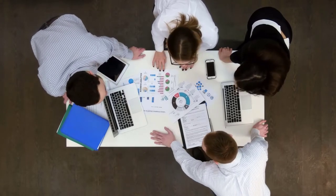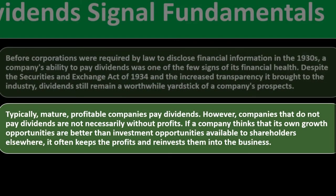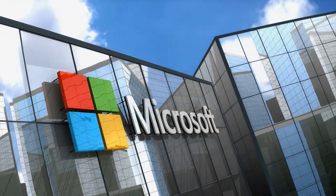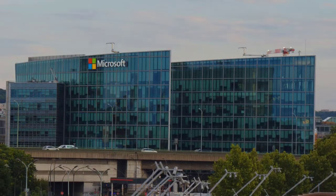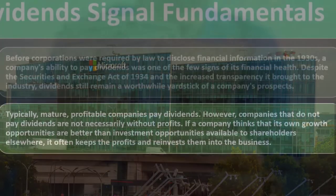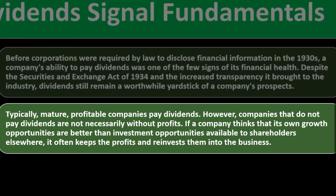At some point, once a company reaches a secure level like Microsoft has now, it may not be putting as much money back into growth at the same rates as before. The revenue they're generating doesn't need to go toward growth and expansion as much, so they can give it out in the form of dividends. Those blue chip stocks that are already built and marching along are the ones most likely to be giving out more dividends. However, companies that don't pay dividends are not necessarily without profits — they may simply reinvest earnings into better internal opportunities.